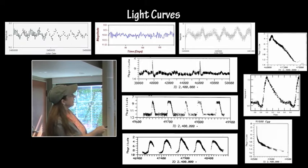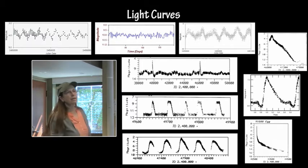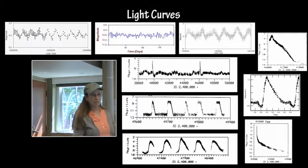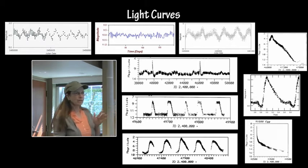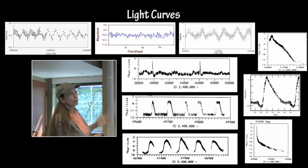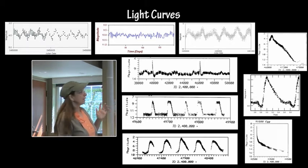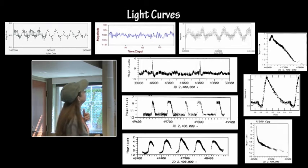But when you see something specific like RR Lyrae or recurrent nova or Mira, you know the kind of star you have. If you plot this change in brightness over time and you come up with these curves, it tells you a lot about the behavior of the star and what's going on.